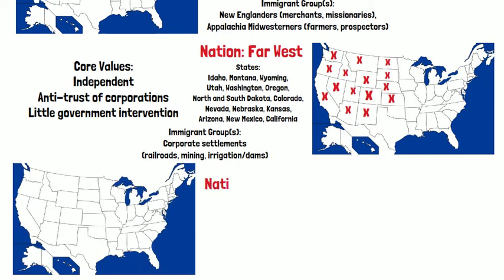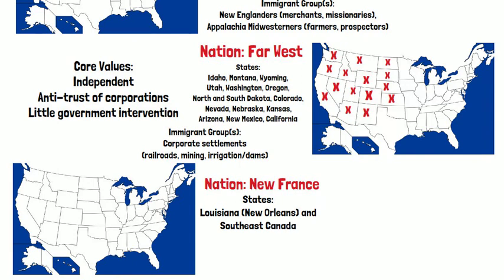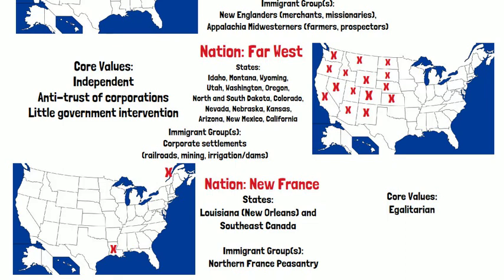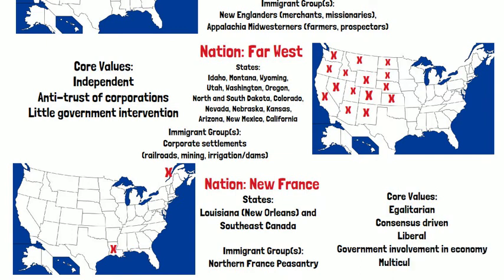The next nation is New France. The immigrant group here is the northern France peasantry. The states include Louisiana, specifically New Orleans, and southeast Canada. The core values here are egalitarianism, consensus-driven, liberal government involvement in the economy, and multiculturalism.